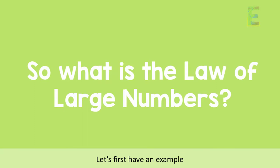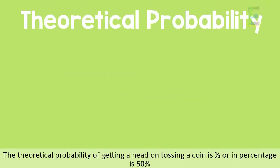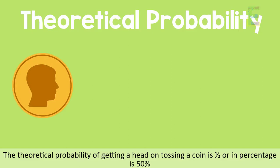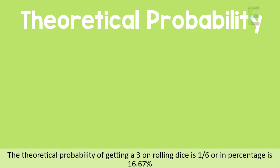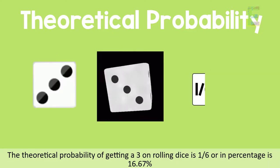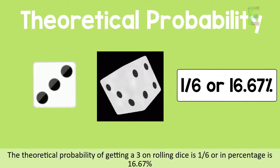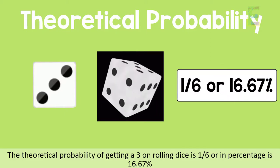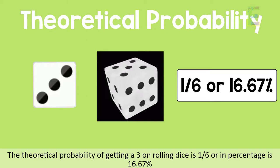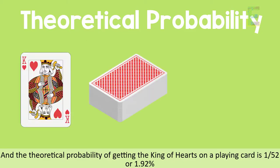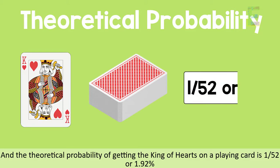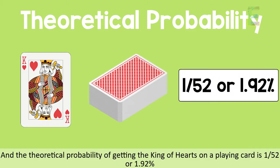The theoretical probability of getting a head on tossing a coin is one half, or 50%. The theoretical probability of getting a three on rolling a die is 1/6, or 16.67%. And the theoretical probability of getting the king of hearts from a playing card is 1/52, or 1.92%.